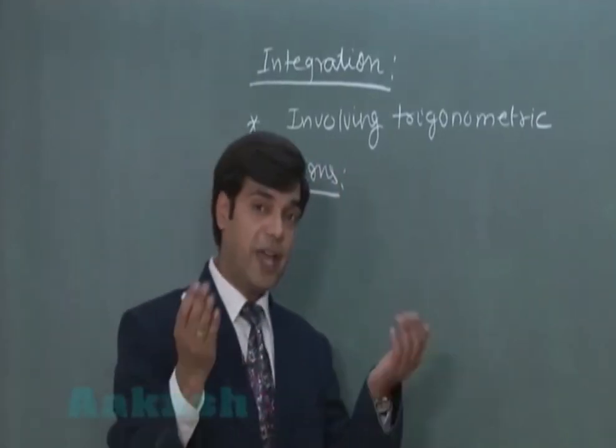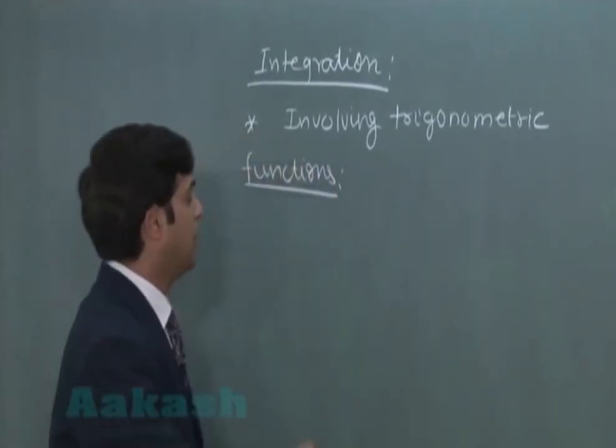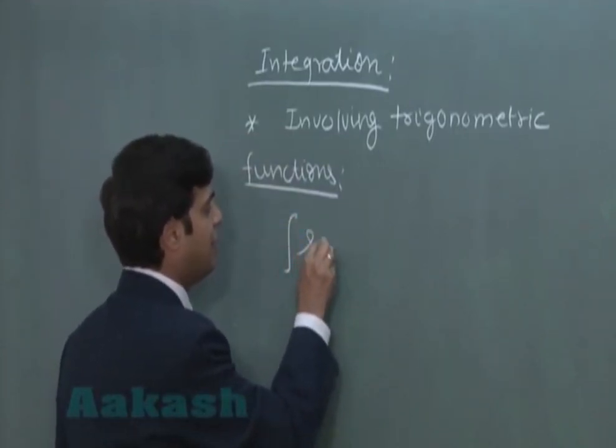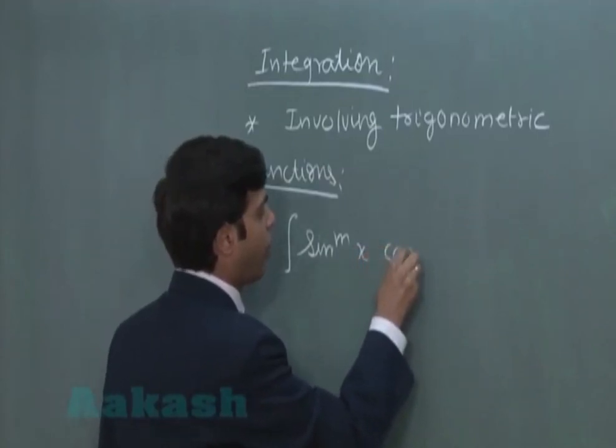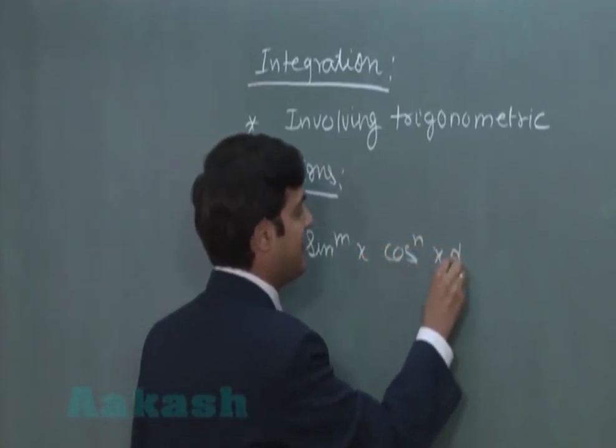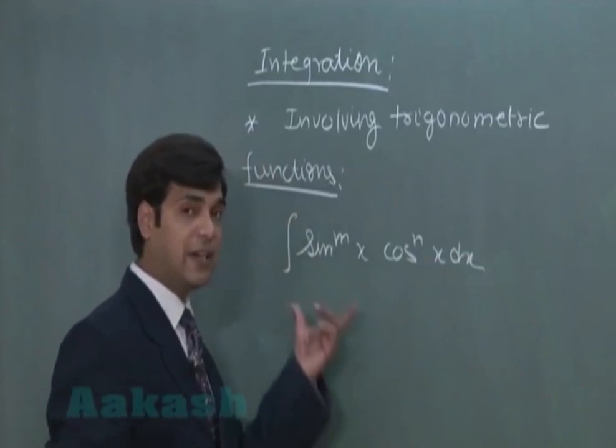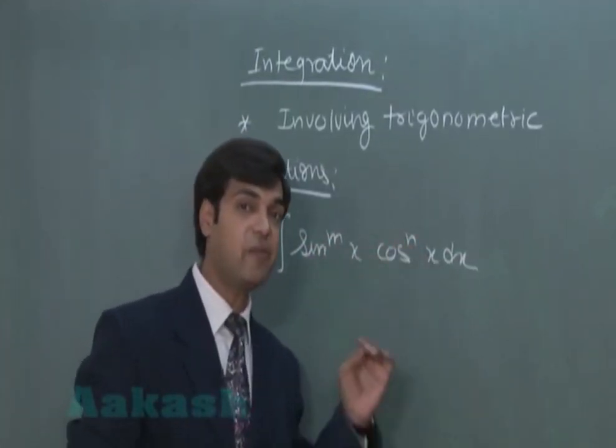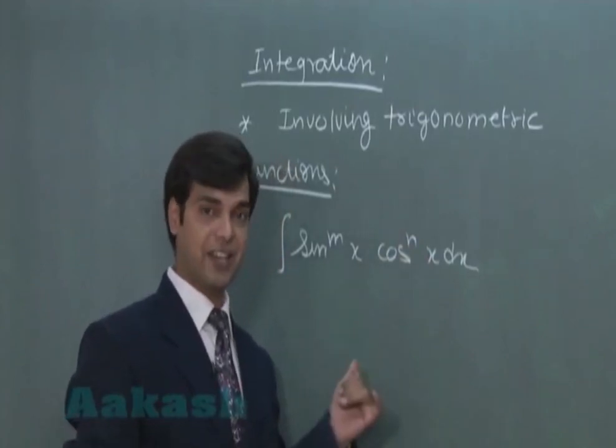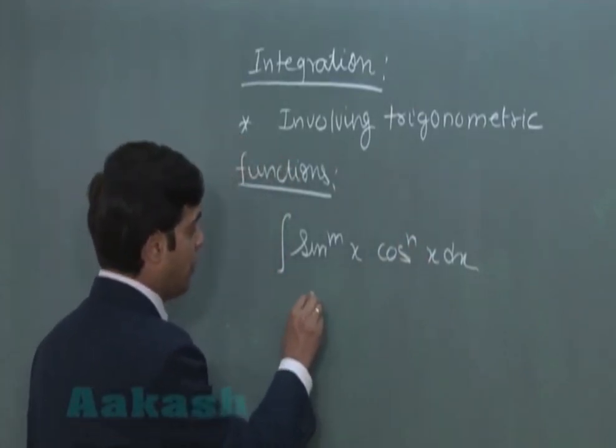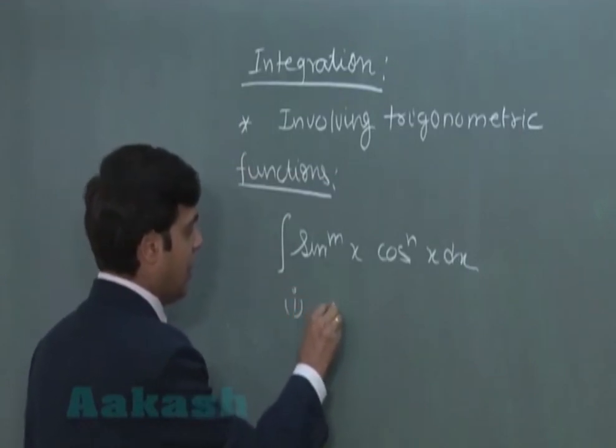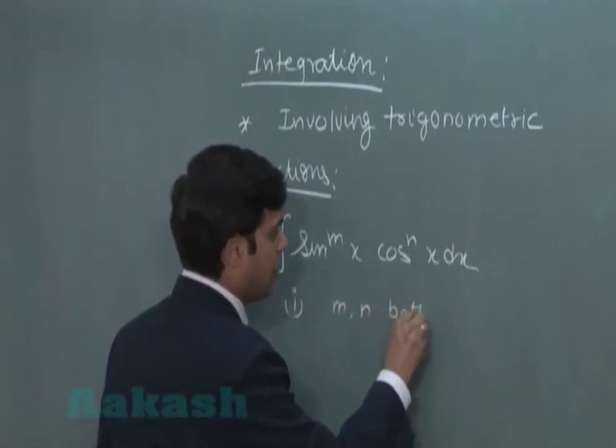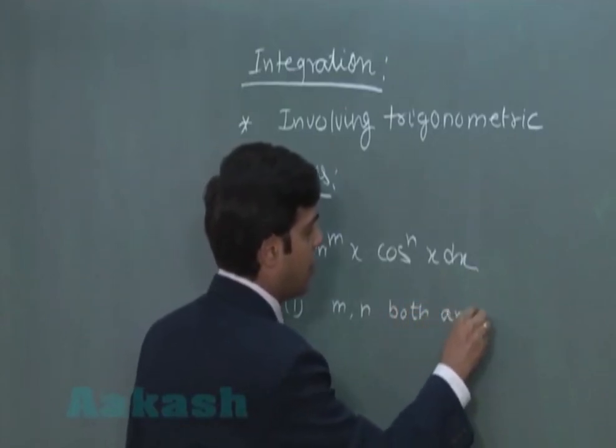Let us consider we have function of the type integral sin^m(x) cos^n(x) dx. We also consider this kind of functions when m plus n is negative even integer in our last lecture. In today's lecture, we will be talking about when m and n both are odd.